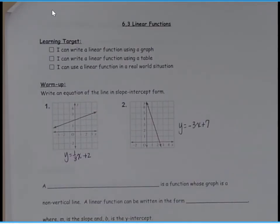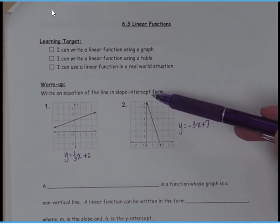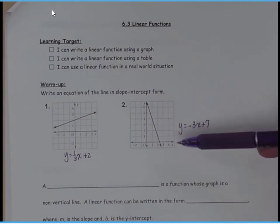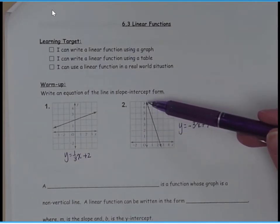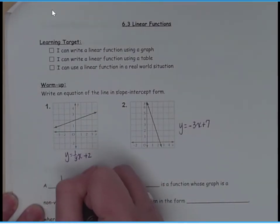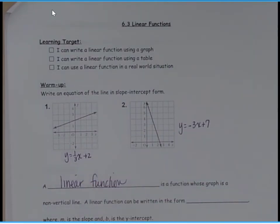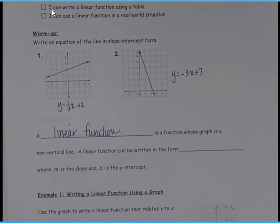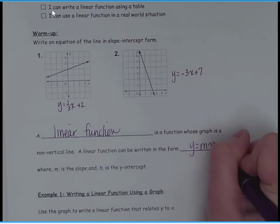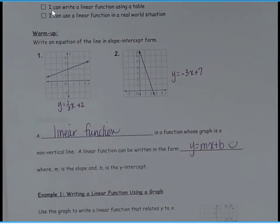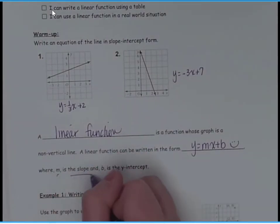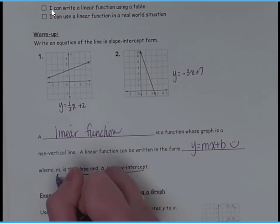All right, so our first one, we have y equals 1 third x plus 2. Our second one, y equals negative x plus 7. You'll notice each of these is a straight line. If I were to talk about this in function form, I would call this a linear function because it is a straight line. A linear function is a function whose graph is a non-vertical line. A linear function can be written in the form of y equals mx plus b. Boy, we've been talking a lot about that lately. Where m is the slope and b, of course, is the y-intercept.